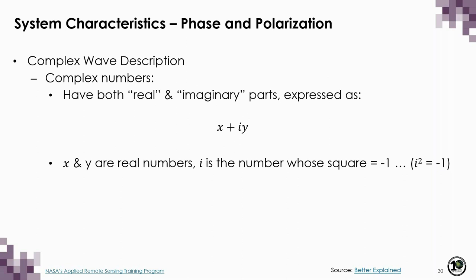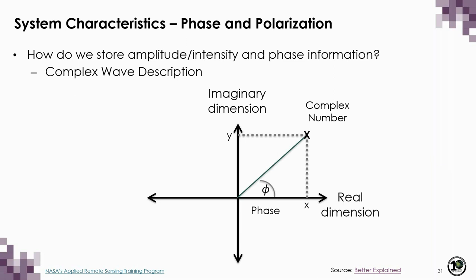Each wave has a phase angle describing at what stage in its wave cycle it's in, as well as an amplitude related to its power. Within this context, we can use complex numbers to store both values. Every complex number has both a real value and an imaginary value expressed as x + iy, where x and y are real numbers and i is the imaginary unit whose square equals negative one. In the complex plane, we replace the x and y axes with the real and imaginary dimensions, and the phase is represented by the angle the vector makes with the real dimension, measured anti-clockwise.